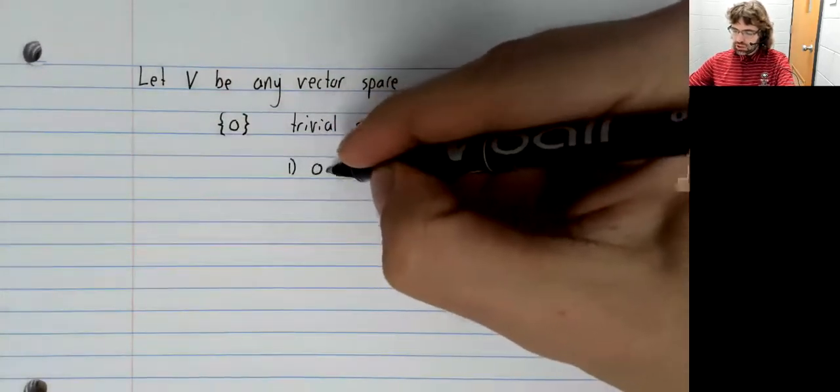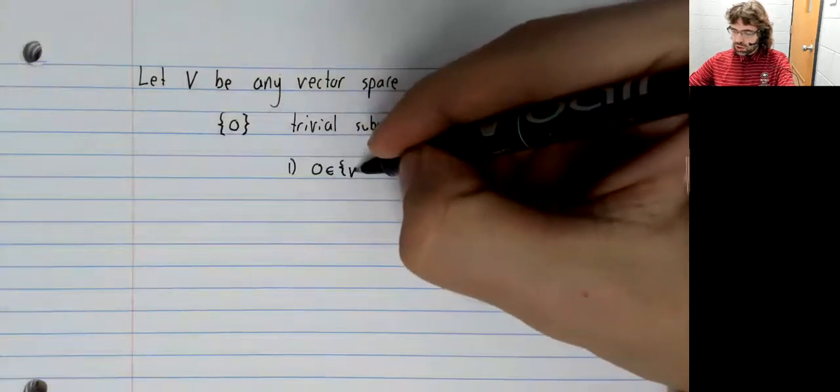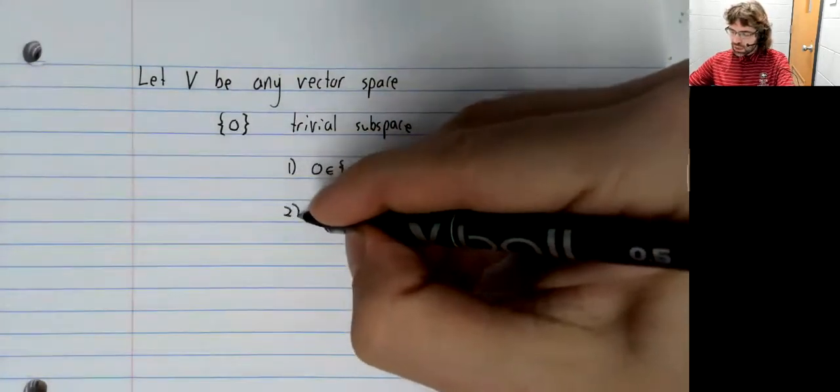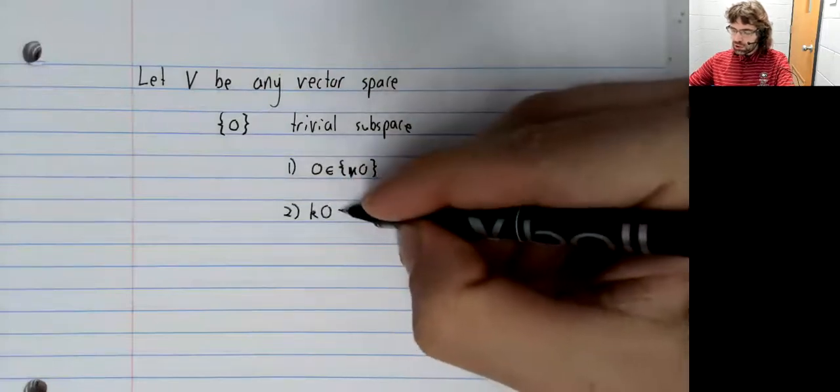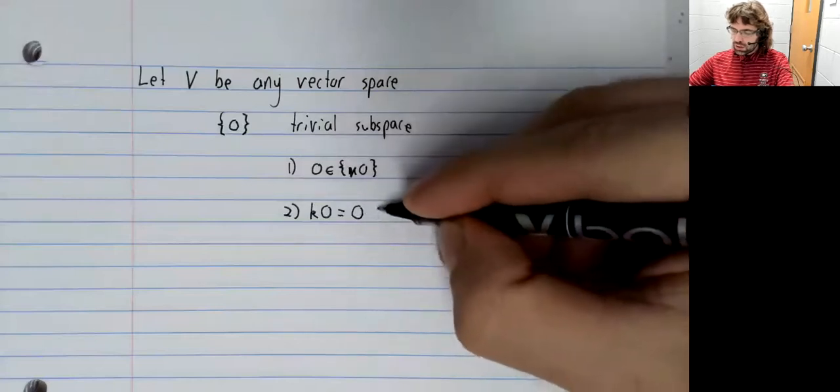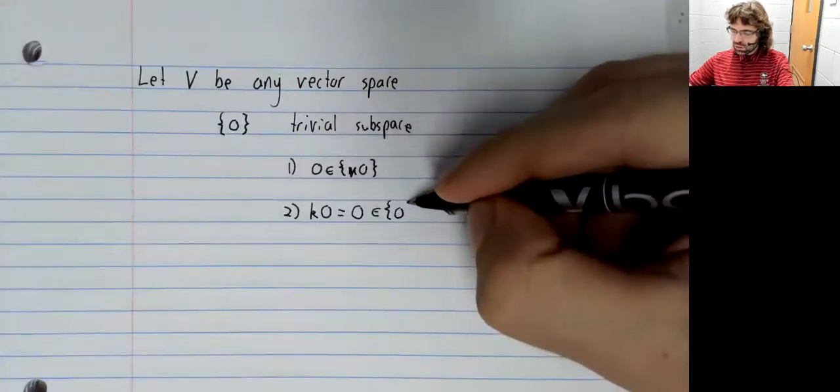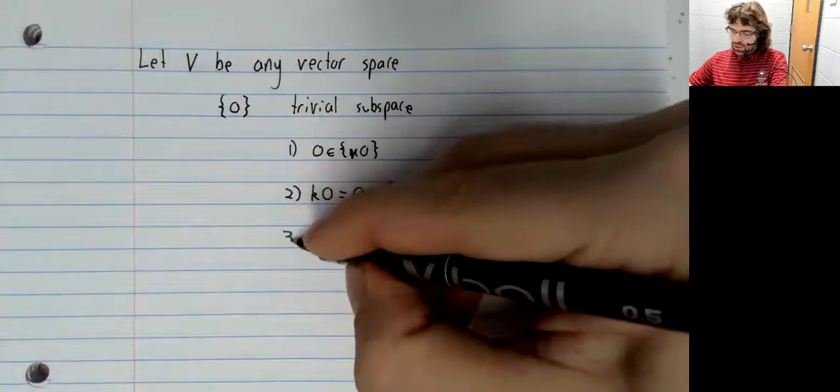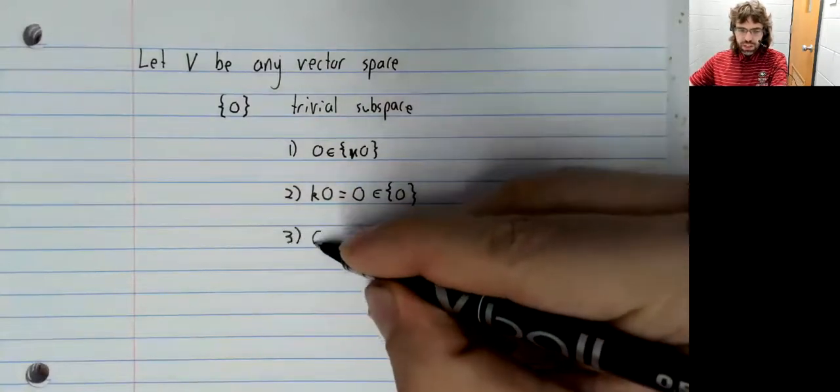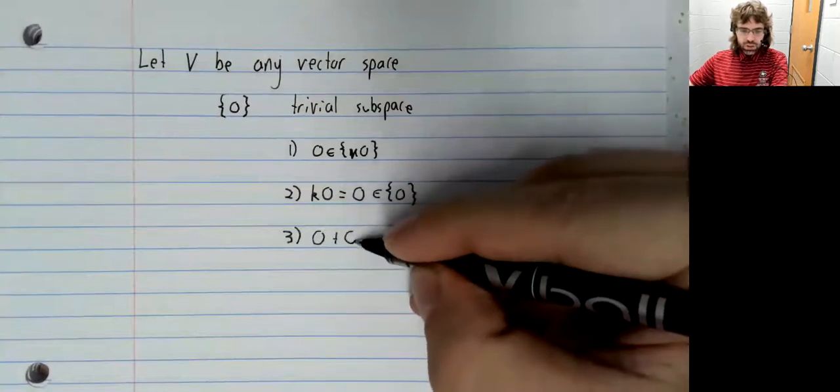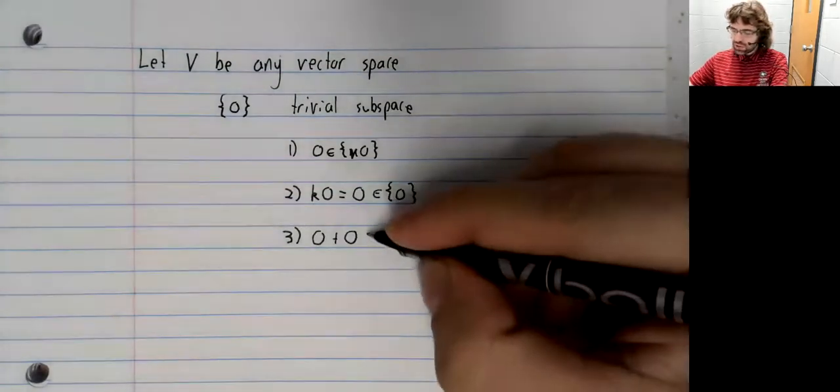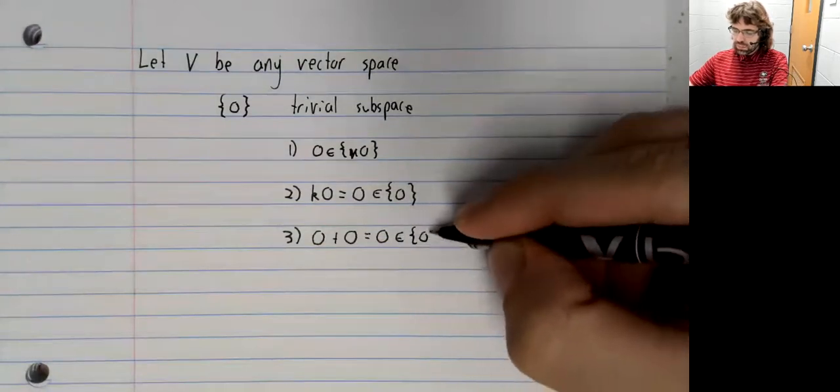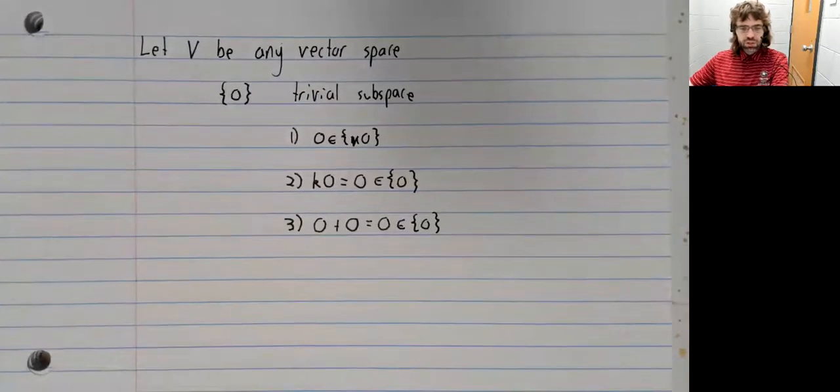Certainly the zero vector belongs to this set. Any scalar times the zero vector is the zero vector and still belongs to this set. Since this set only contains one vector, the only addition we can do is zero plus zero. That is still the zero vector, and it still belongs to this set.